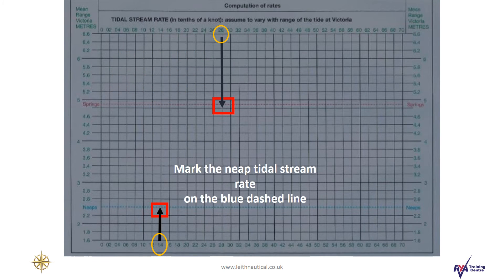Secondly, we mark the neap tidal stream rate on the blue dashed line. Working from the scale on the bottom of the page, we work along until we find our tidal stream rate of 1.4 knots. This is the rate that we will be using.